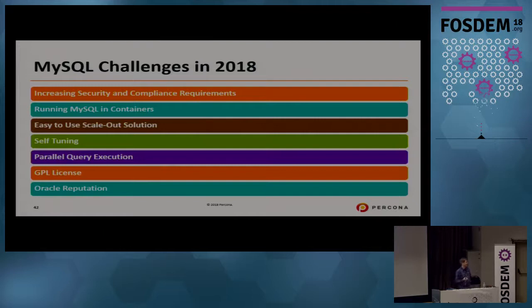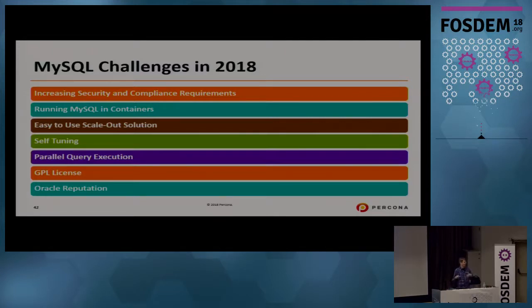A license such as AGPL, which MongoDB uses, is much more protective for a company that doesn't want somebody to just take their IP, add something on top, and run it in the cloud. I also believe what is very painful and destructive for MySQL is Oracle's reputation.